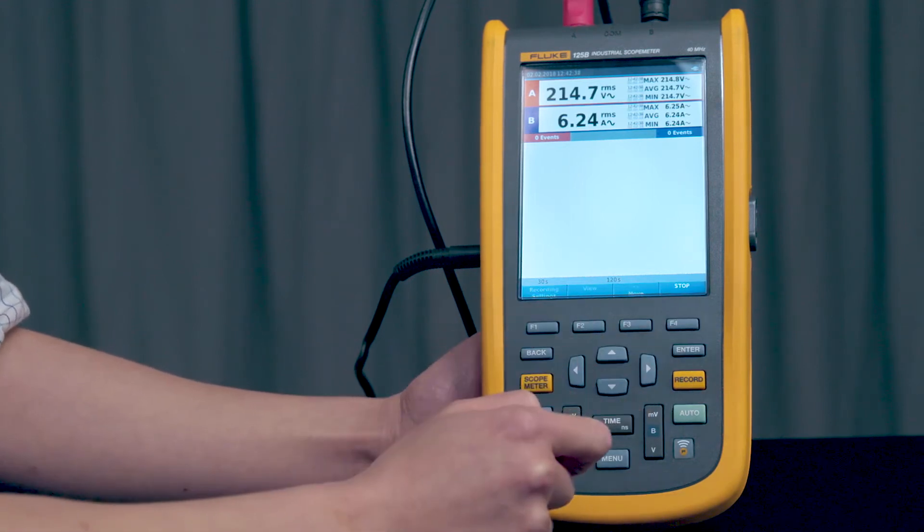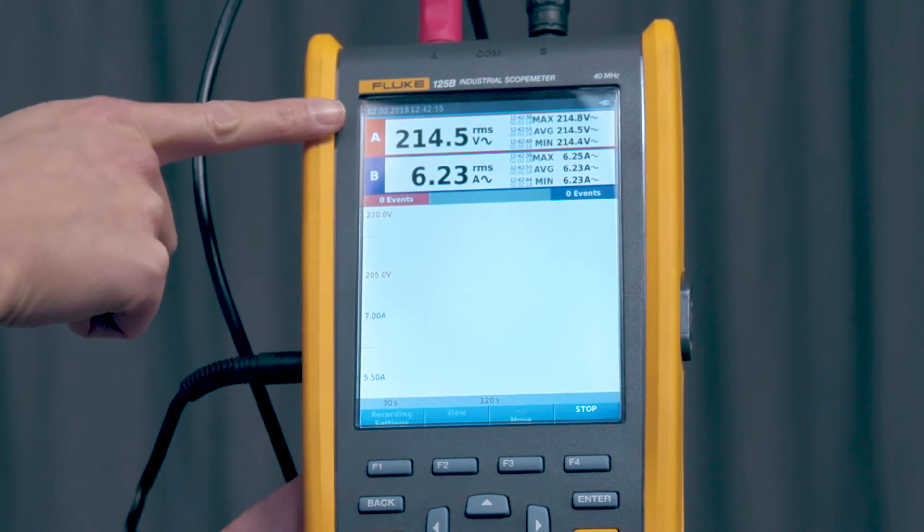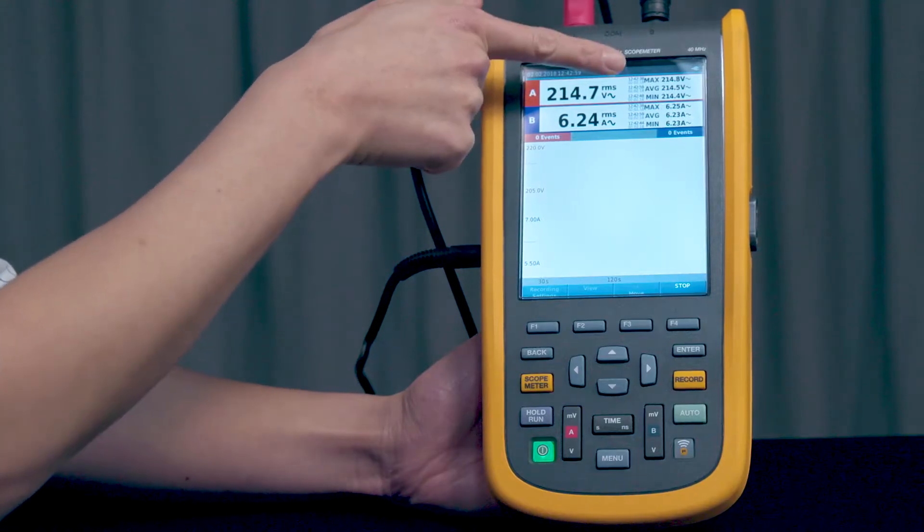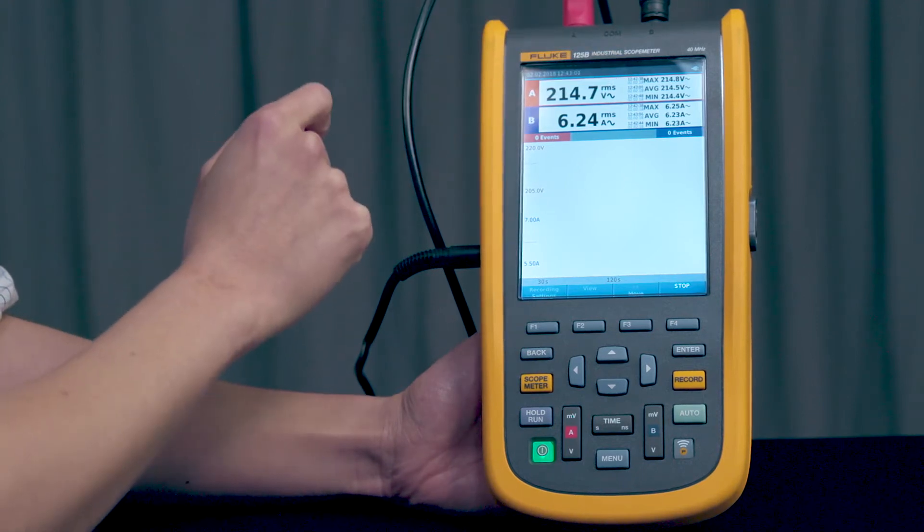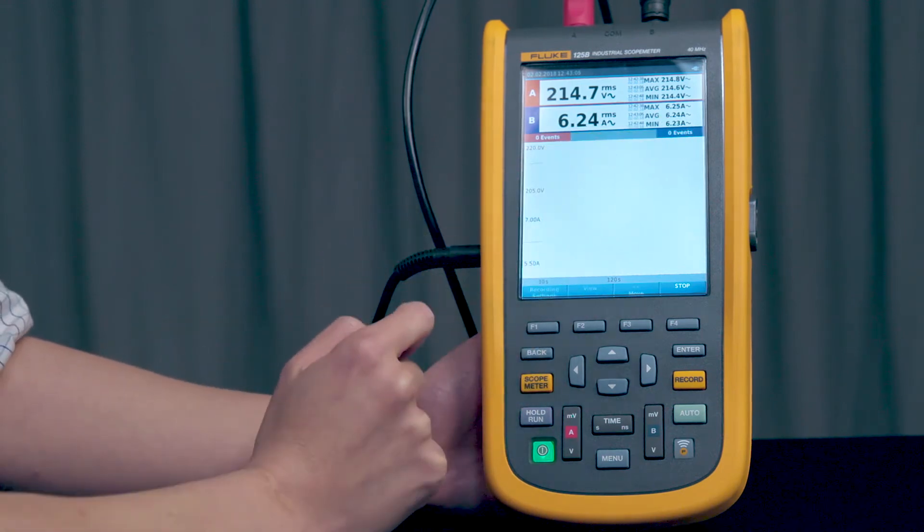Press F4 to run. I have it set up to measure both voltage and current. Voltage in channel A and voltage in channel B. You can also see the max, average, and minimum of each channel.